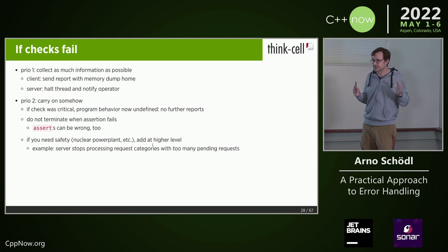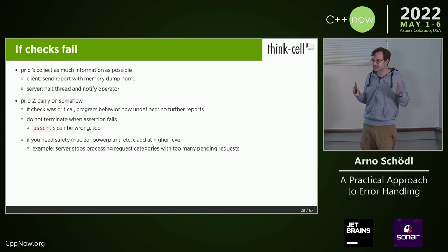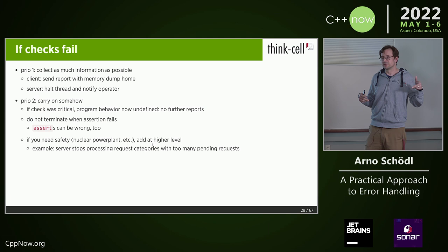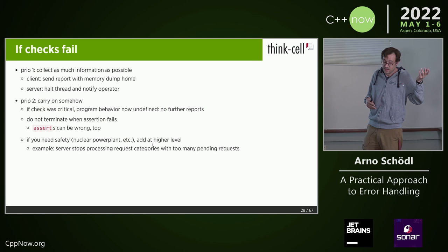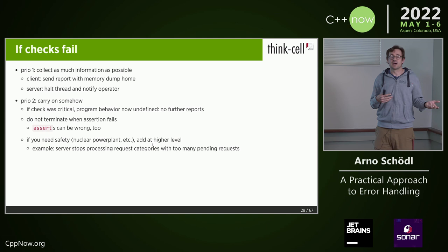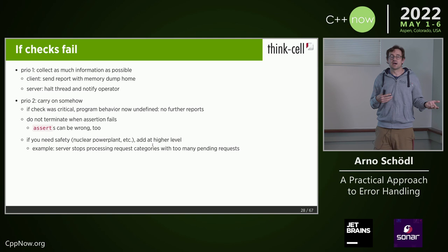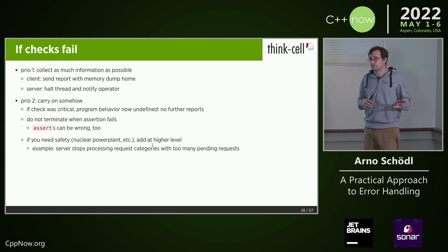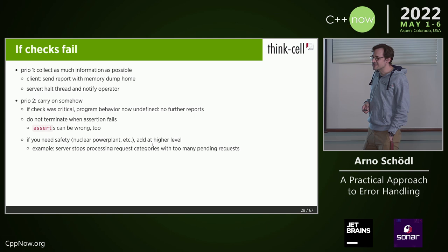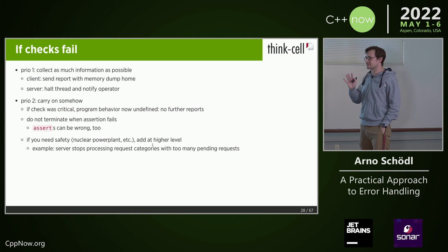Of course if you need safety, you have to add this at another level. When an assertion fails, can you carry on, or may things go wrong and the nuclear power plant explodes? If you need safety you have to add it at another level. What our server does: it has several categories of requests, and every time a check fails, that thread stops or goes into an infinite loop. We count the number of threads handling a particular type of request, and when that goes above a certain limit we just stop taking that type of request, hoping the other request types have fewer bugs.